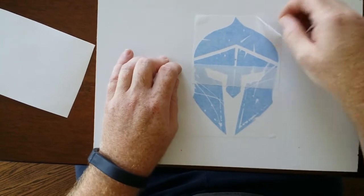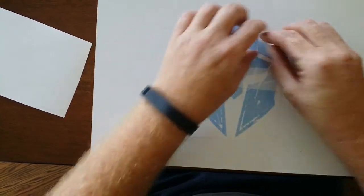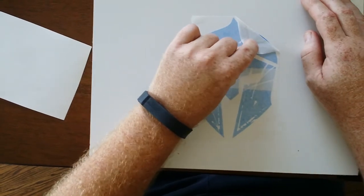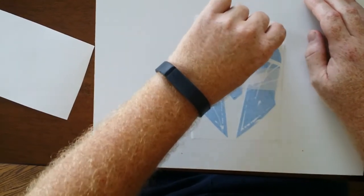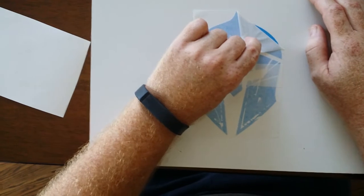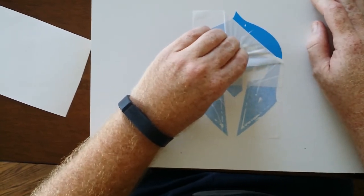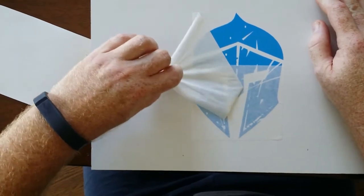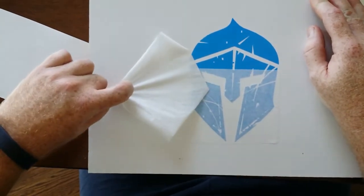Then take the application tape and as you're pulling it, try to pull back flat. Try not to pull up, pull back flat. And as you do, the masking tape or the application tape will come right off.